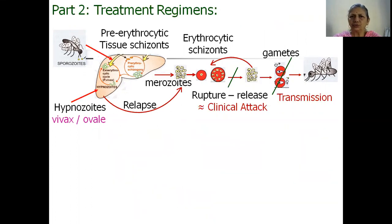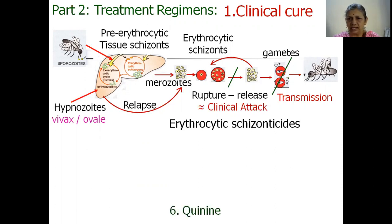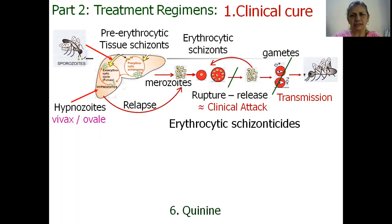Let us now go on to the actual treatment regimen for clinical cure. Clinical cure needs a rapidly acting erythrocytic schizonticide. The first erythrocytic schizonticide introduced in the management of malaria was quinine, but because of its toxic potential it is no longer the drug of choice. However, it does remain important for managing chloroquine resistant malaria.